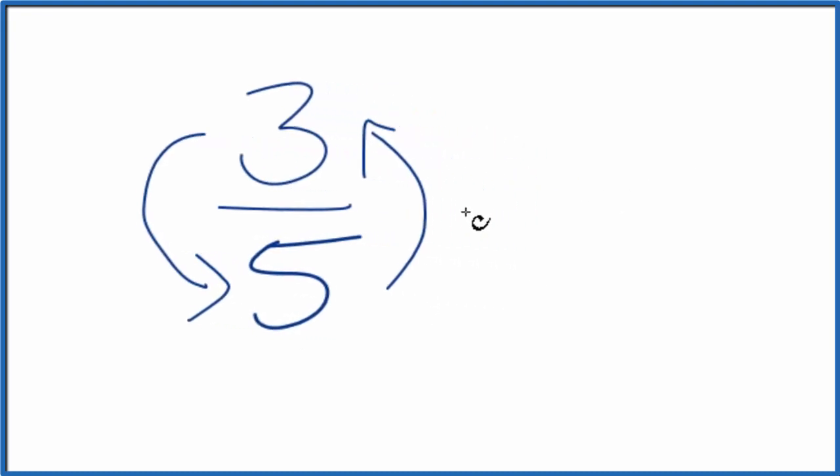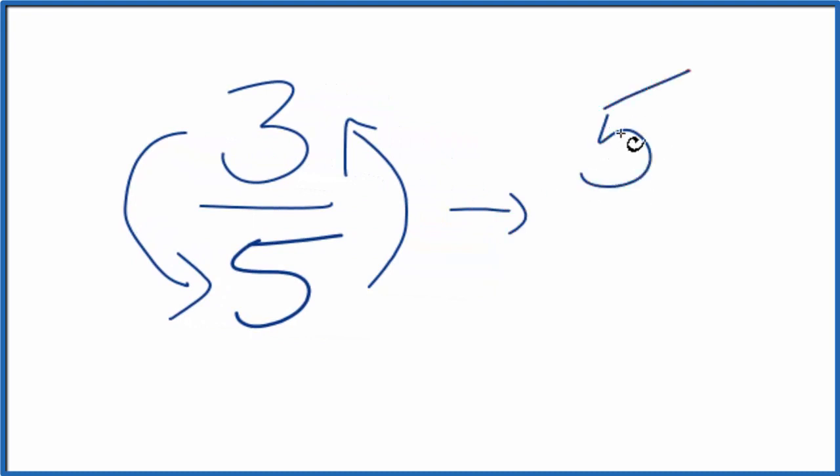So here we'll put 5 on top and then the 3, that'll be our denominator. So the reciprocal for 3 fifths is 5 thirds, or 5 over 3.